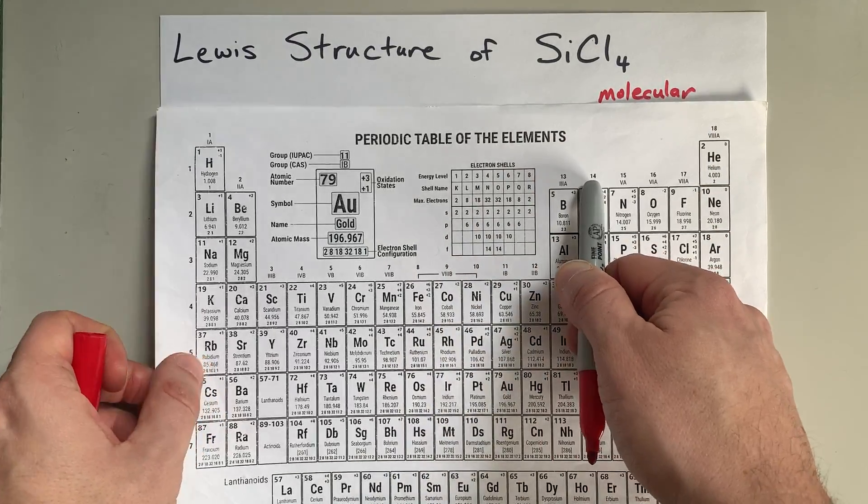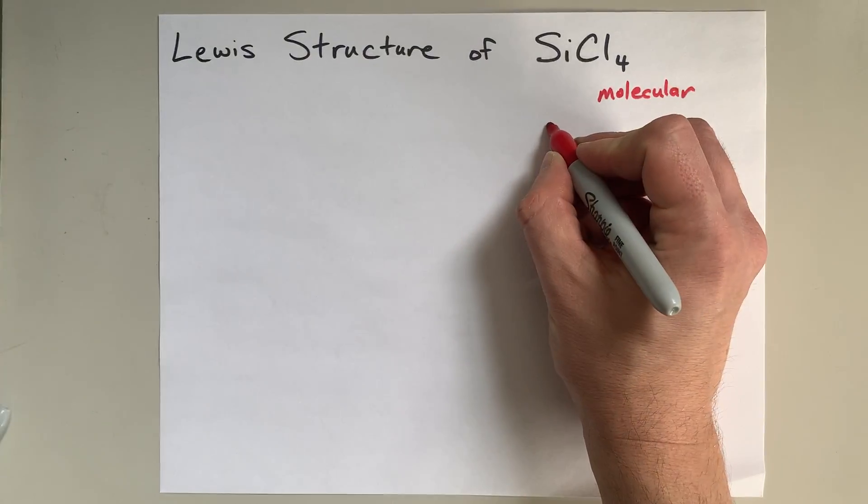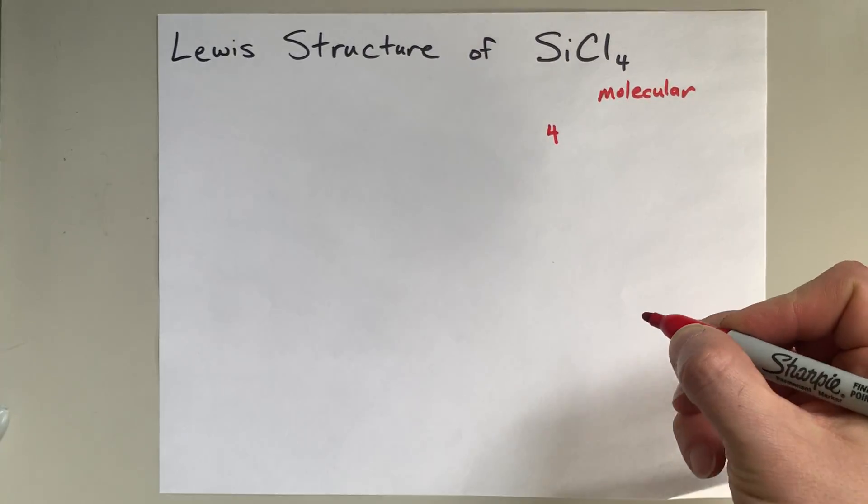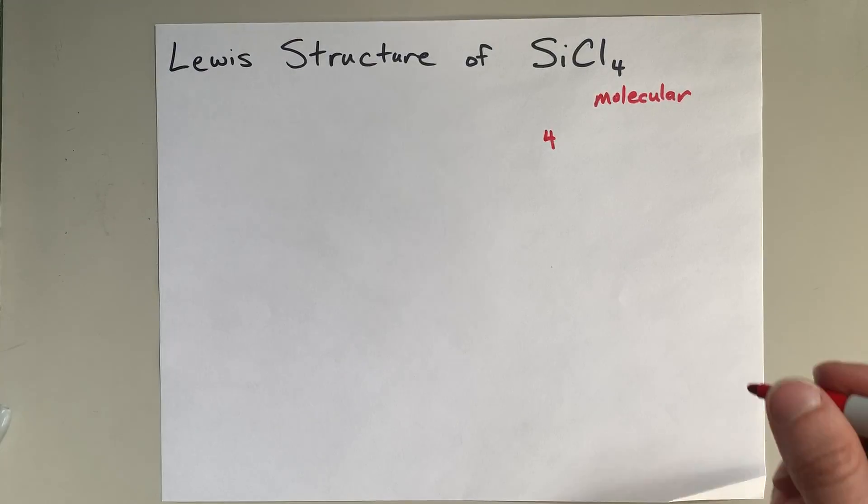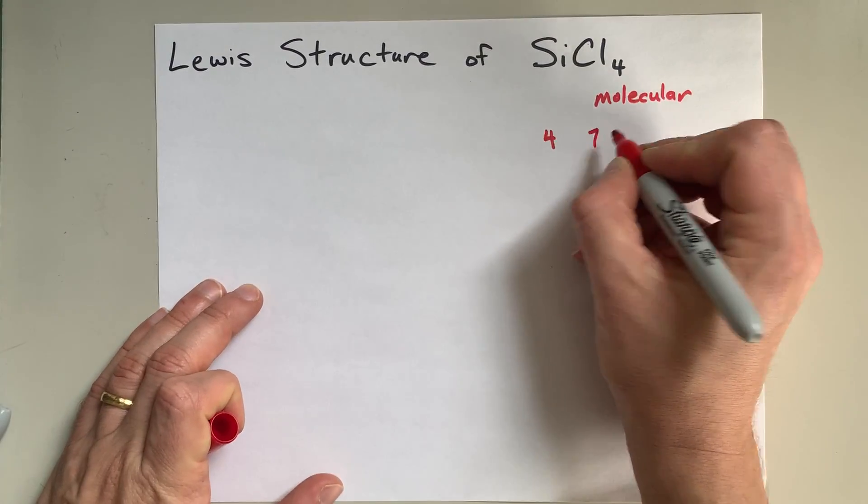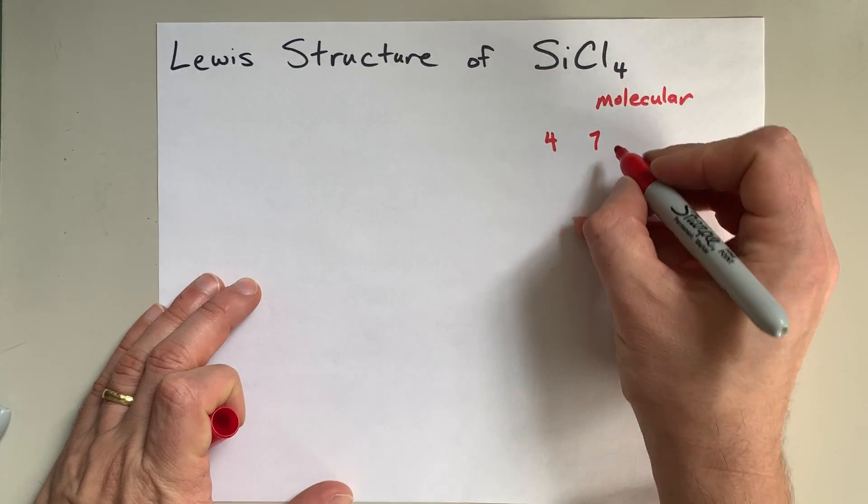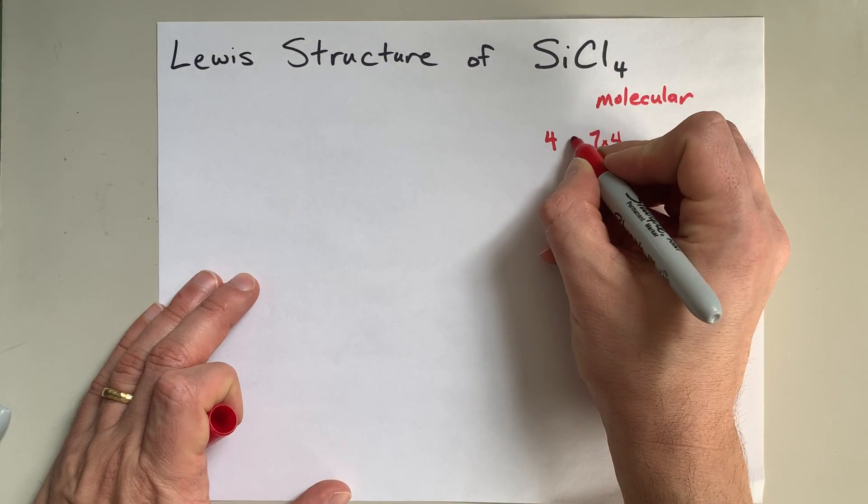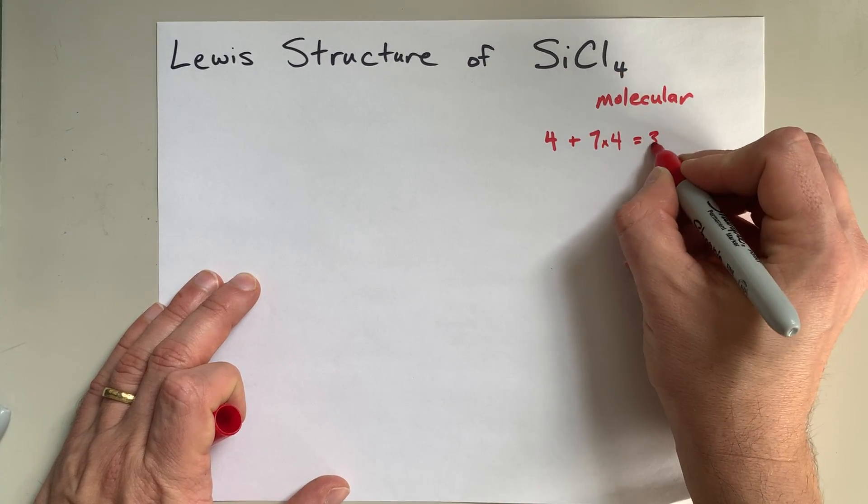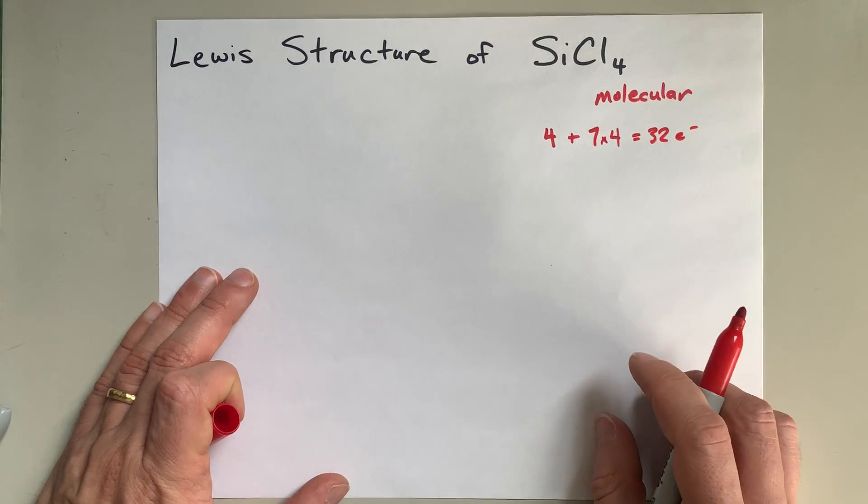Silicon is in group 14 of the periodic table, and so brings four valence electrons with it. Chlorine is in group 17 of the periodic table, and so brings seven valence electrons, but there are four of them. So I've got to do four times that seven, added to the four that silicon brings. That's 32 electrons total.